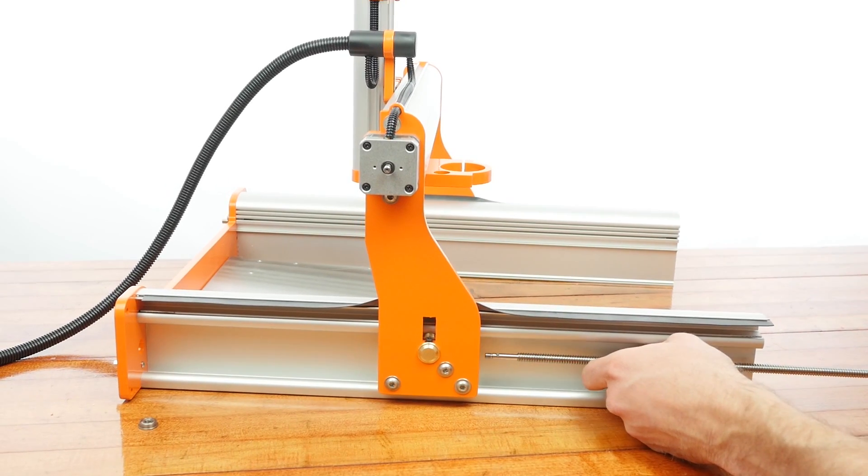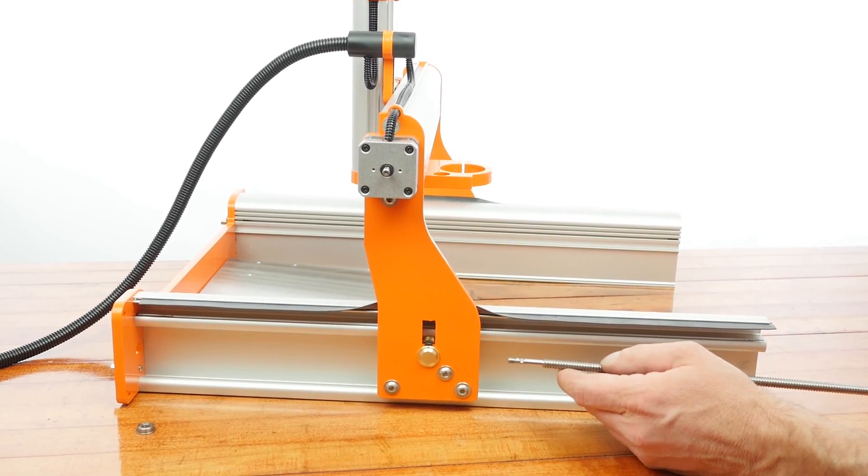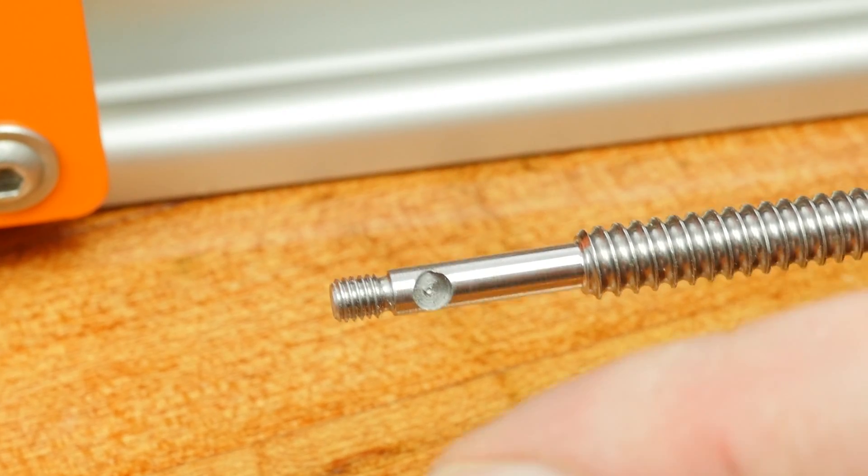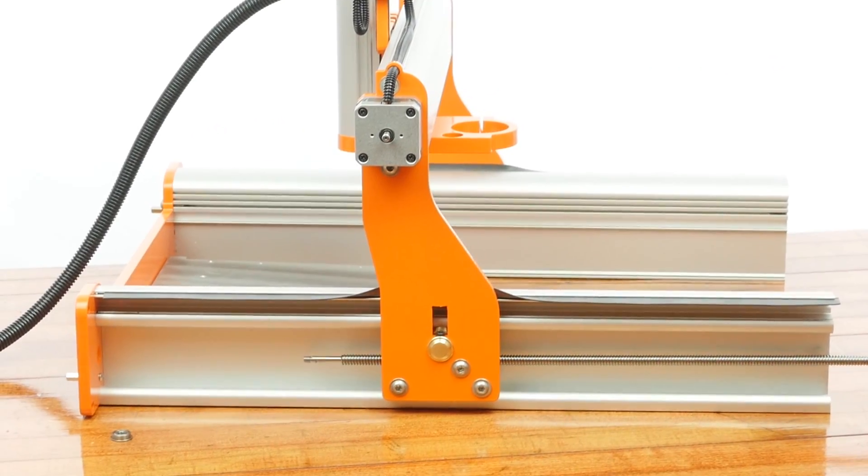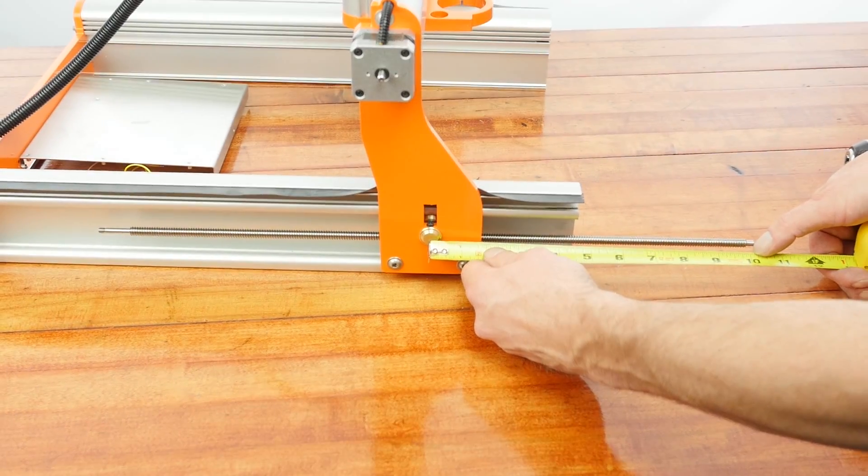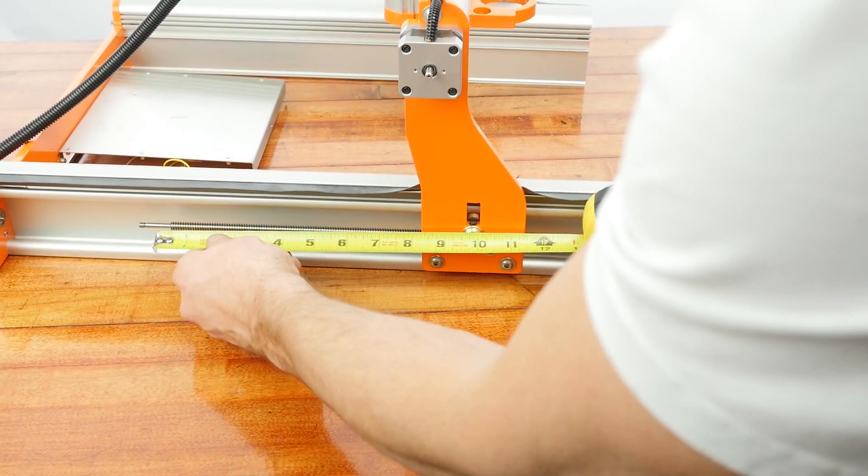Next, we'll be installing the y-axis lead screws. Notice the flat spot. We'll be threading this end in first. We're looking for about 10 inches of threaded rod on both sides of the upright.